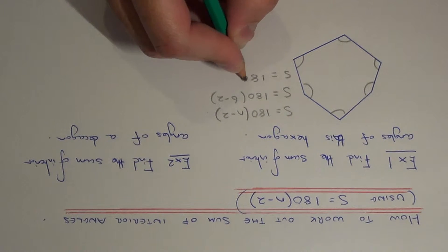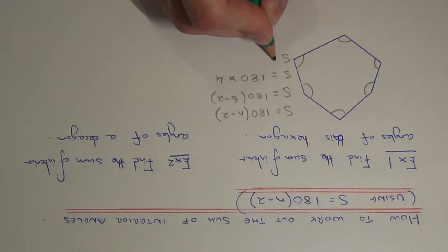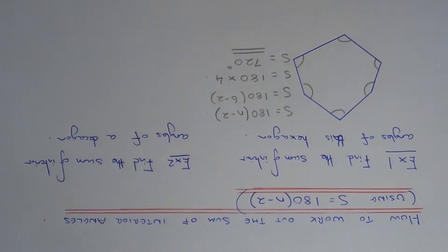So we need to work out 180 multiplied by 4, so 180 times 4 is 720 degrees. So this is the total of all the angles inside the hexagon.